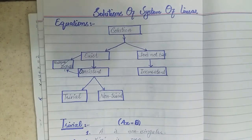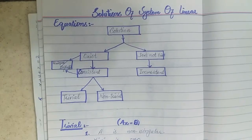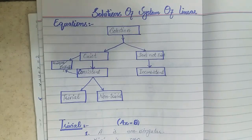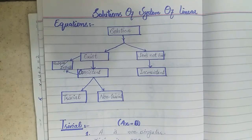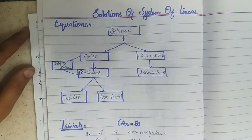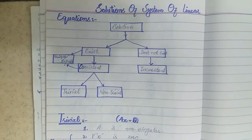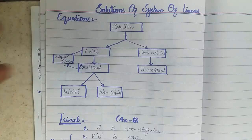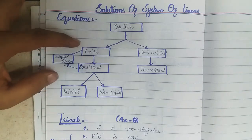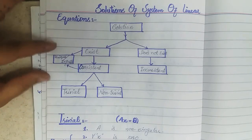Bismillah ar-Rahman ar-Rahim. Assalamu alaikum students. In today's lecture we will discuss that the system of linear equation solutions can be described in different categories. As we have discussed in earlier methods — Gauss elimination method, Gauss-Jordan method, value factorization method — we have seen that either a solution exists or not. If solution exists, then it may be unique or infinite.